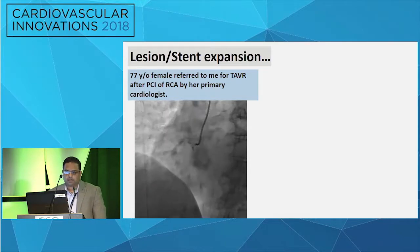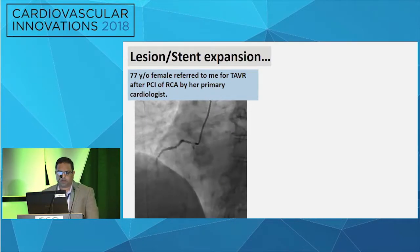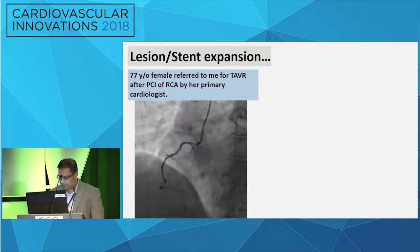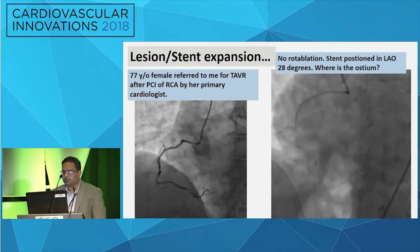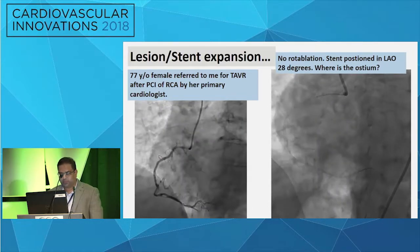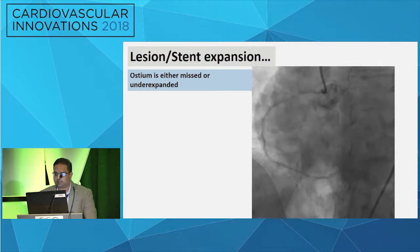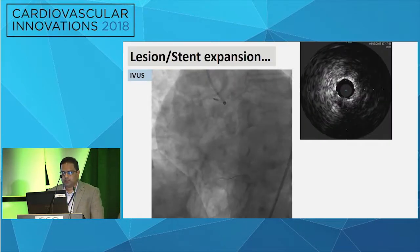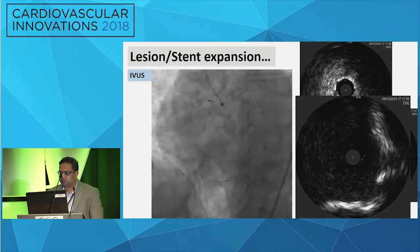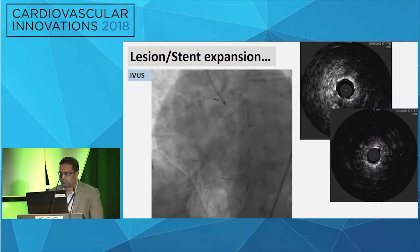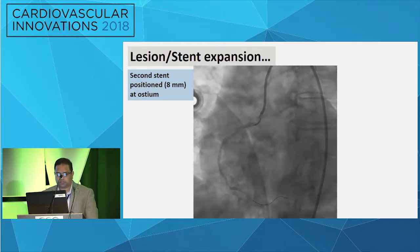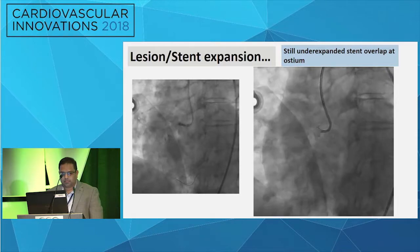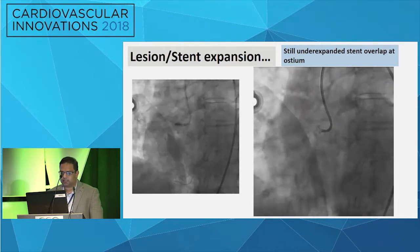Another instructive case: a 77-year-old female referred to me for TAVR after PCI of her right coronary artery by her primary cardiologist. The original image shows heavy calcium and a tight osteo lesion. In retrospect, looking at all the films, it was a shallow LAO projection, so the ostium was really unclear. The stent was deployed, but either the ostium was missed or under-expanded. IVUS confirmed there were no stent struts at the aorta-osteal junction and there was persistent lesion in the proximal vessel. An 8-millimeter stent was then positioned at the ostium — obviously suboptimal to have overlap — and though it didn't fully expand, it appears the ostium was treated this time.